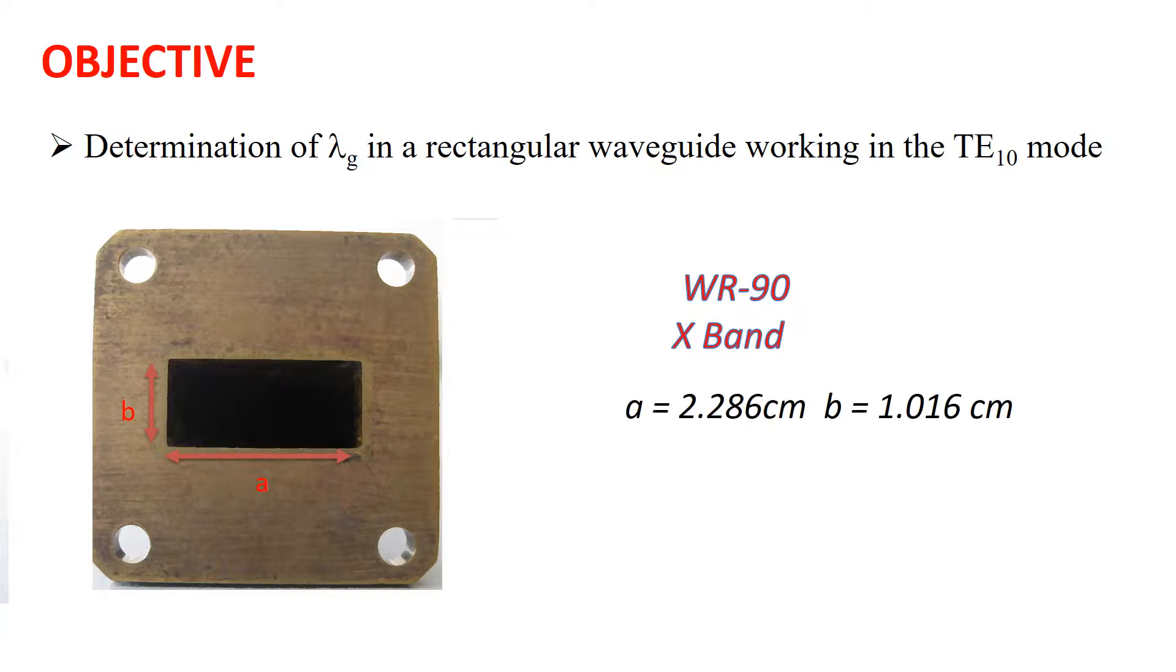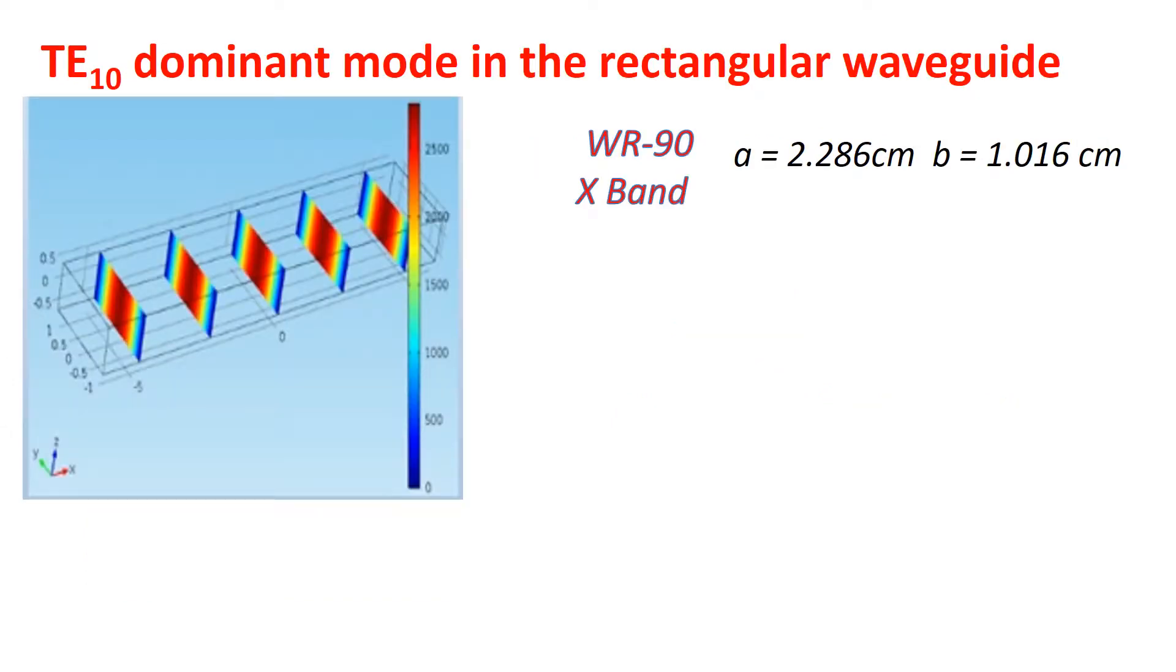The choice of this waveguide is because it works in the X-band and its height is very adequate for the experimental setup. As is known, the TE10 is the dominant mode in the rectangular waveguide on the condition that the operating frequency will be between the cutoff frequency of the TE10 mode and the corresponding to the next mode.